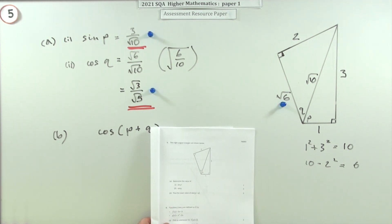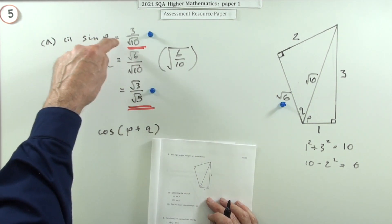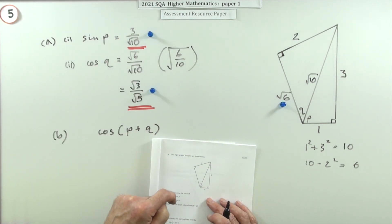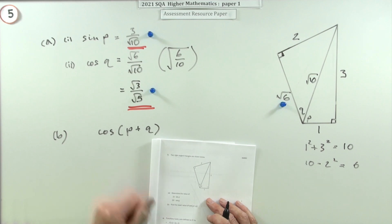So part B for three marks: find the exact value of cos(P+Q). Now it's saying exact value, so you don't just do inverse sine of this to get the angle P, inverse cos of that to get the angle Q, add them together and then find the cosine, because that'll just be approximate.